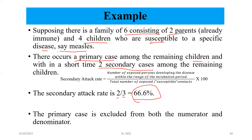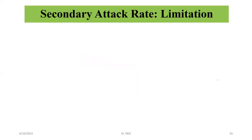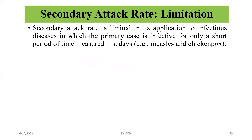For this calculation we apply this formula, and with help of this formula we can find out the correct answer. Some limitations for secondary attack rate: secondary attack rate is limited in its application to infectious disease in which the primary case is infected for only a short period of time, measured in days — for example, measles and chicken pox.